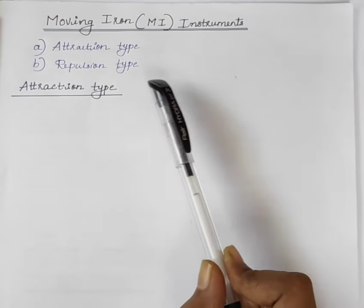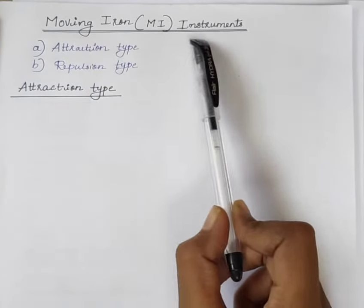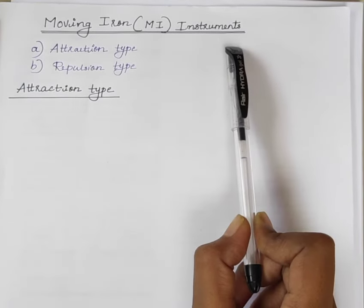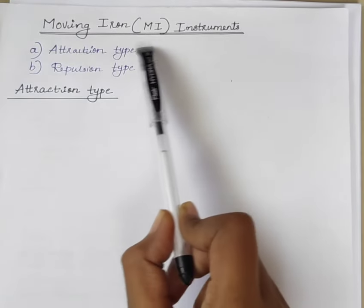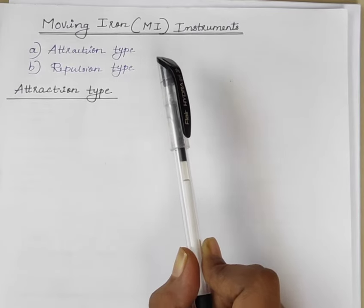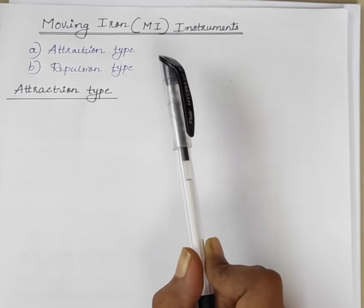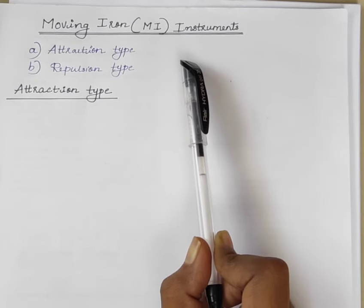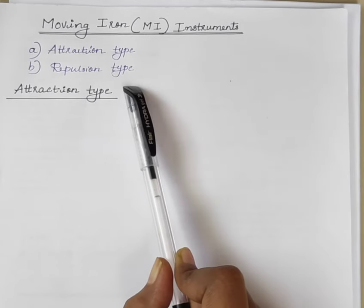Hi students, today's topic of discussion is moving iron instruments, that is MI instruments. The instrument in which moving iron is used for measuring the flow of current or voltage is known as moving iron instruments. These instruments are of two types: attraction type and repulsion type.